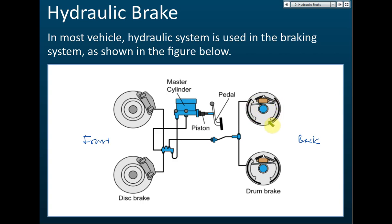A student may ask: why does the front use disc brake and the back use drum brake? That is because the disc brake is a very good brake — it contributes to about 90 percent of the braking effect. Even at high temperature, it still works very well. The temperature of the brake can be very high because when you stop the car, the kinetic energy turns into heat energy. So the disc brake can function at very high temperatures and contributes about 90 percent of the braking effect.